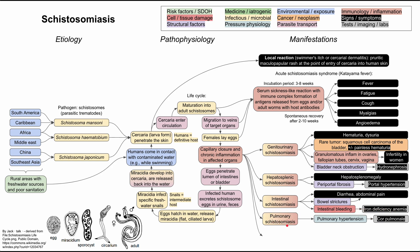Pulmonary schistosomiasis can cause pulmonary hypertension, which can lead to cor pulmonale and symptoms of right heart failure, including jugular venous distension, lower extremity edema, and hepatojugular reflux.